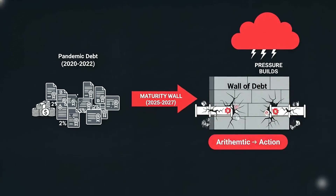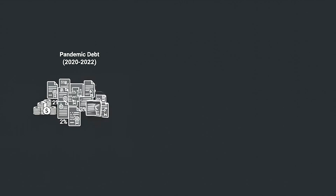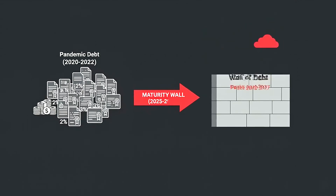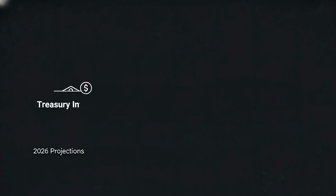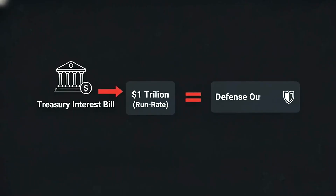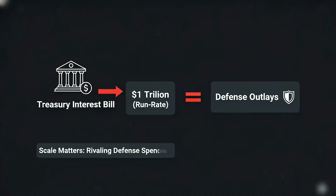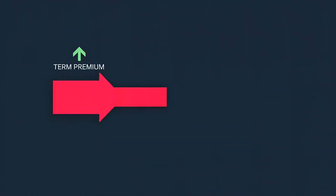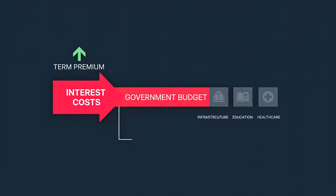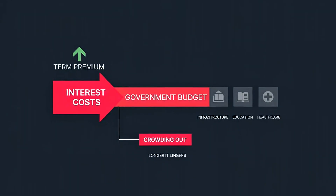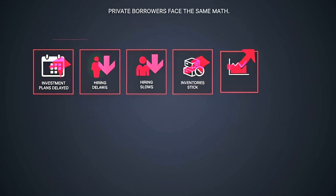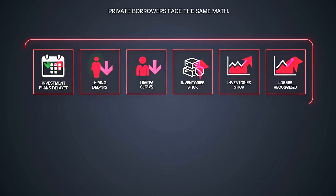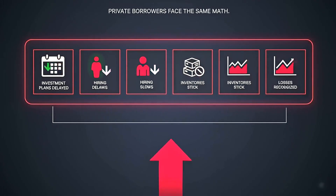Now the pressure builds at the wall. Maturity wall: when lots of debt comes due at once, it peaks into 2026 and 2027 for both corporates and the sovereign. The Treasury's interest bill approached $1 trillion on a run-rate basis — a sum that now rivals or exceeds defence outlays in several projections. Scale matters here. Interest costs crowd out other spending. The longer the extra term premium lingers, the larger the crowding. Private borrowers face the same math. Investment plans get delayed, hiring slows, inventories stick, then losses get recognised. That's when things shift.